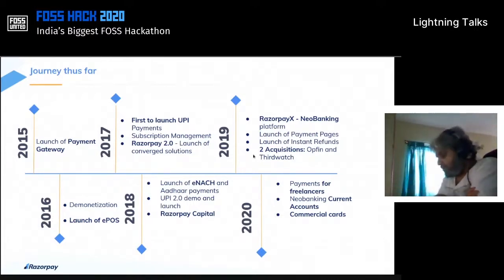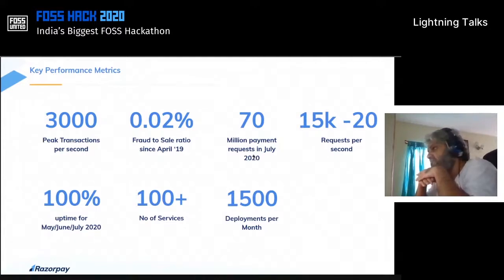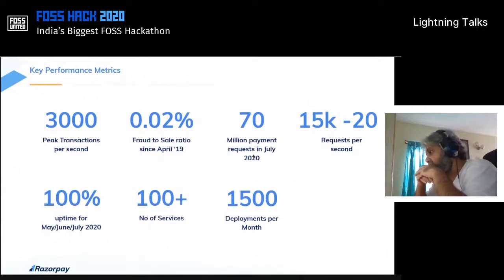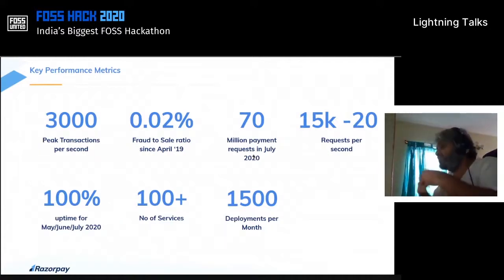To give you some numbers drawn from mid-pandemic, around June — one of the lowest times economically — we were on average doing about 15 to 20,000 transaction requests per second. Actual transactions run around 3,000 per second. Fraud-to-sale ratio at 0.02%. 70 million payment requests in the month of July. Fairly decent uptime, hundreds of microservices, and about 1,500 deployments per month. These numbers are useful context for understanding the role of open source.